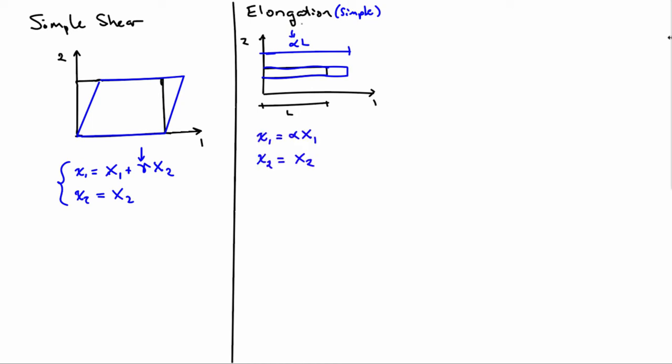So in this case, written out in components, the deformation map is quite simple. Little x1, the location of a point, is equal to that proportionality constant alpha times X1, and points don't move in the two direction in simple elongation. And so little x2 is equal to capital X2.